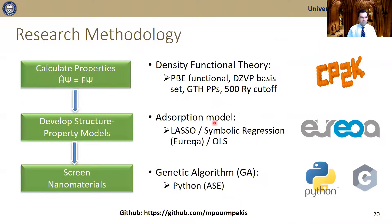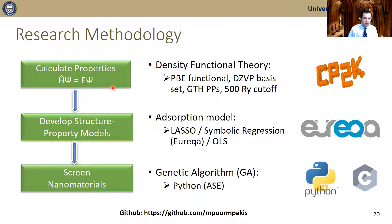This is the research approach we follow in this project, and also the typical approach in our lab over the last couple of years. First, we calculate the properties of nanomaterials with first-principles calculations. Then we use machine learning to develop structural-property relationships — such as symbolic regression — and also to screen nanomaterial behavior through the development of genetic algorithms.